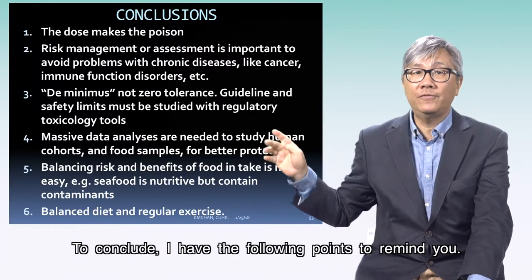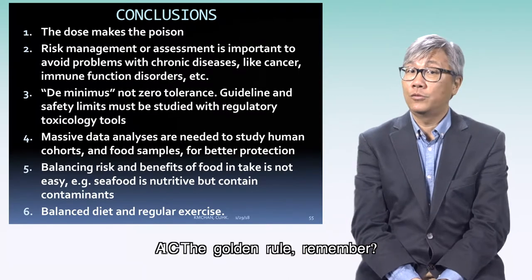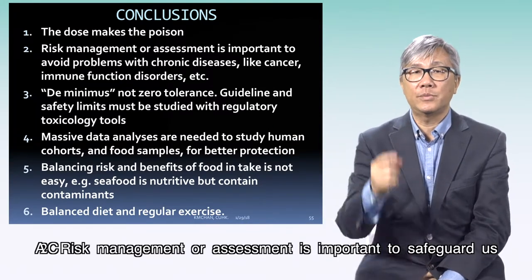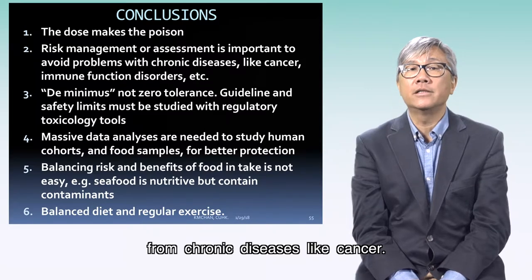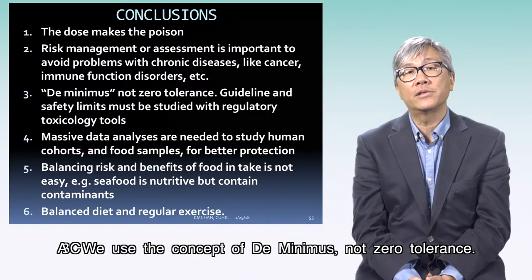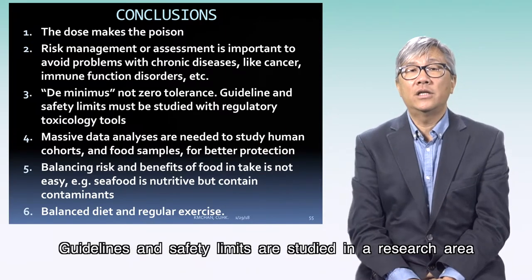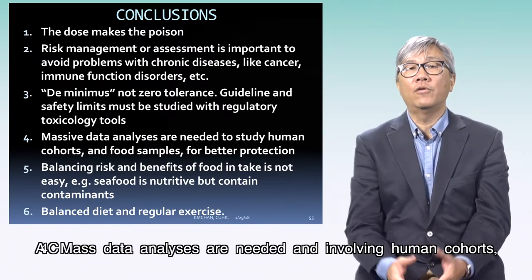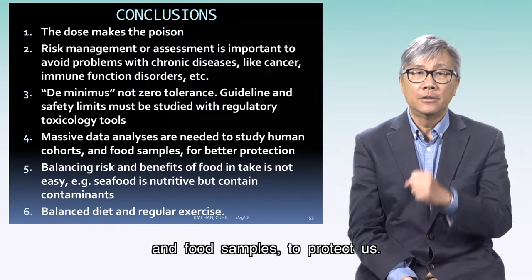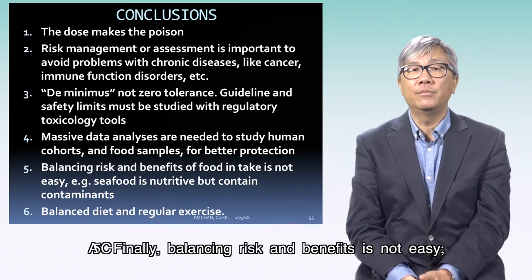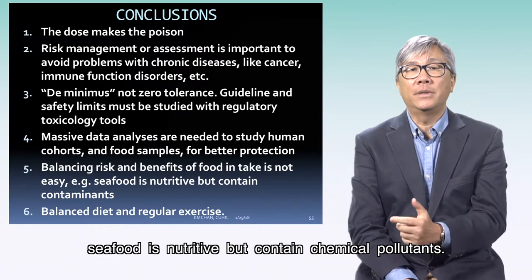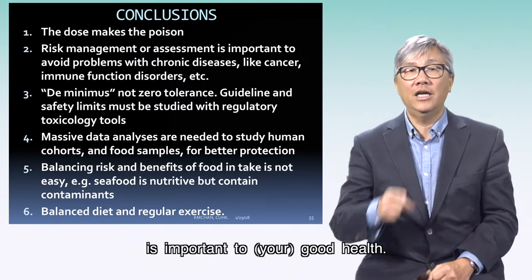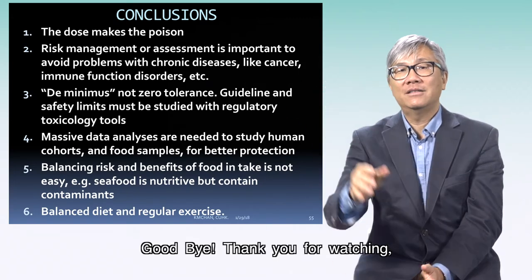To conclude, here are the key points to remember. One: the golden rule — the dose makes the poison. Two: risk management and assessment is important to safeguard us from chronic diseases like cancer; we use the concept of de minimis, not zero tolerance. Guidelines and safety limits are studied in regulatory toxicology, and mass data analysis involving human cohorts and food samples are needed to protect us. Finally, balancing risks and benefits is not easy — seafood is nutritious but contains chemical pollutants. My final advice is to have a balanced diet. Regular exercise is important to good health. Goodbye, and thank you for watching.